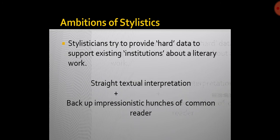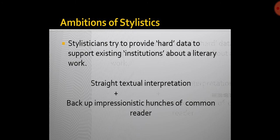There is another example here — Hemingway has a plain style. When we read The Sun Also Rises, we have a hunch that it is written in very simple, plain language. A stylistician, however, would actually provide you evidence saying that 73% of the nouns and verbs used by Hemingway in a given book are without adjectival or adverbial qualification — he would actually pinpoint this.